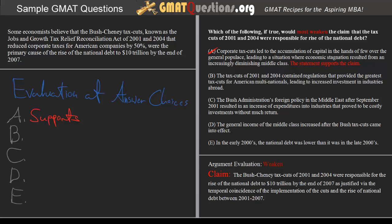B: The tax cuts of 2001 and 2004 contained regulations that provided the greatest tax cuts for American multinationals, leading to increased investment in industries abroad. What we get here is the idea that the implementation of the tax cuts led to an incentive for American multinationals to invest abroad, and we can presume that this investment abroad had something to do with the increase in the deficit. Here again, we're presented with a statement that would support rather than weaken the passage, because the tax cuts themselves would be responsible for investment abroad. Even if the actual investment abroad might seem like an alternative factor, it is indebted to the tax cuts and nevertheless supports the passage. So B is incorrect.